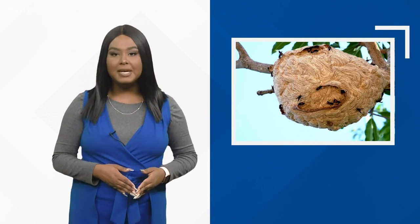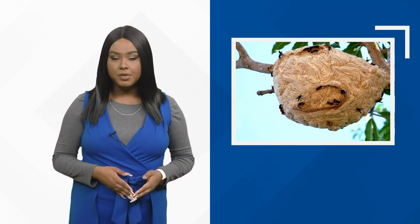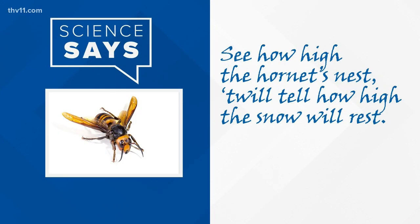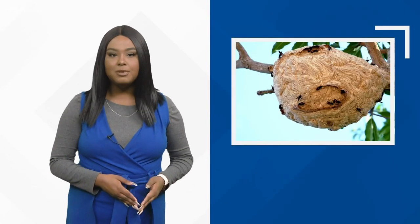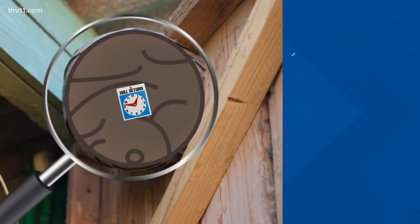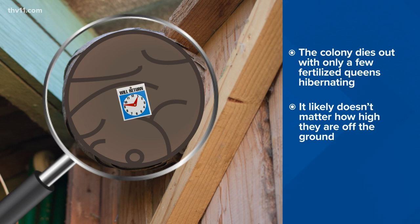The height of a wasp, hornet, or bee nest has been used to determine whether it will be a snowy winter. There's a weather lore rhyme: 'See how high the hornet's nest will tell how high the snow will rest.' It's been thought they build high to protect the nest for an upcoming hard winter. During the arrival of winter, most of these nests are empty — the colony dies out with only a few fertilized queens left hibernating, so it likely doesn't matter how high the nests are off the ground.